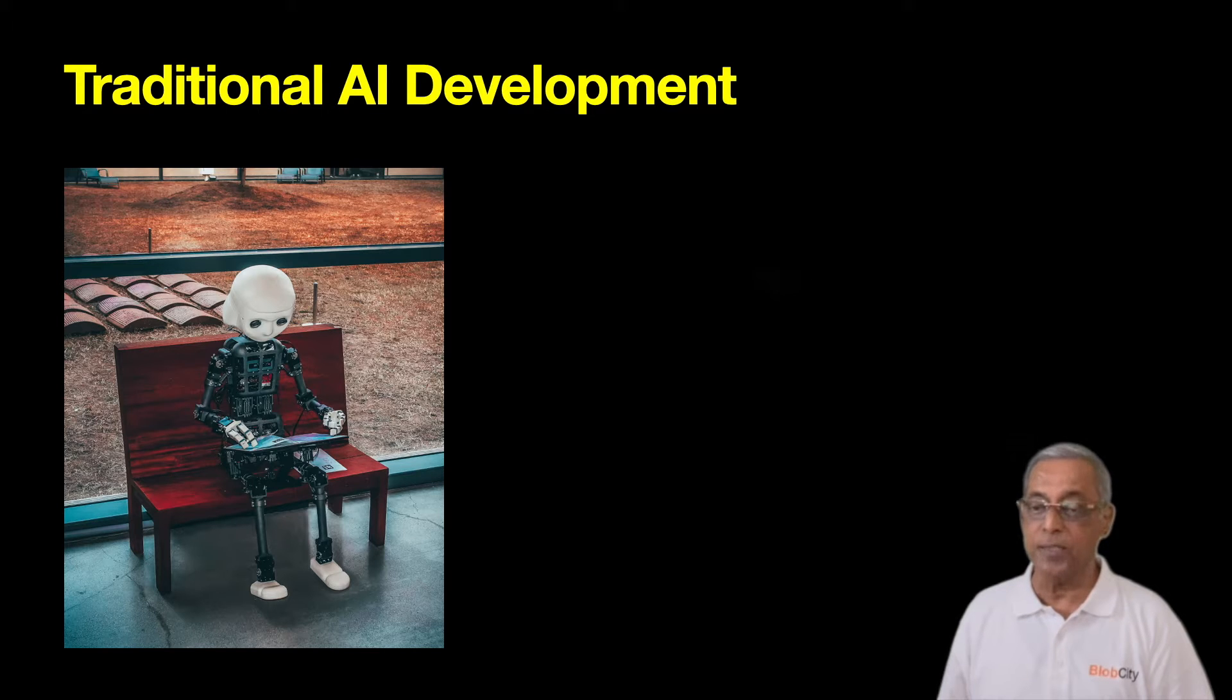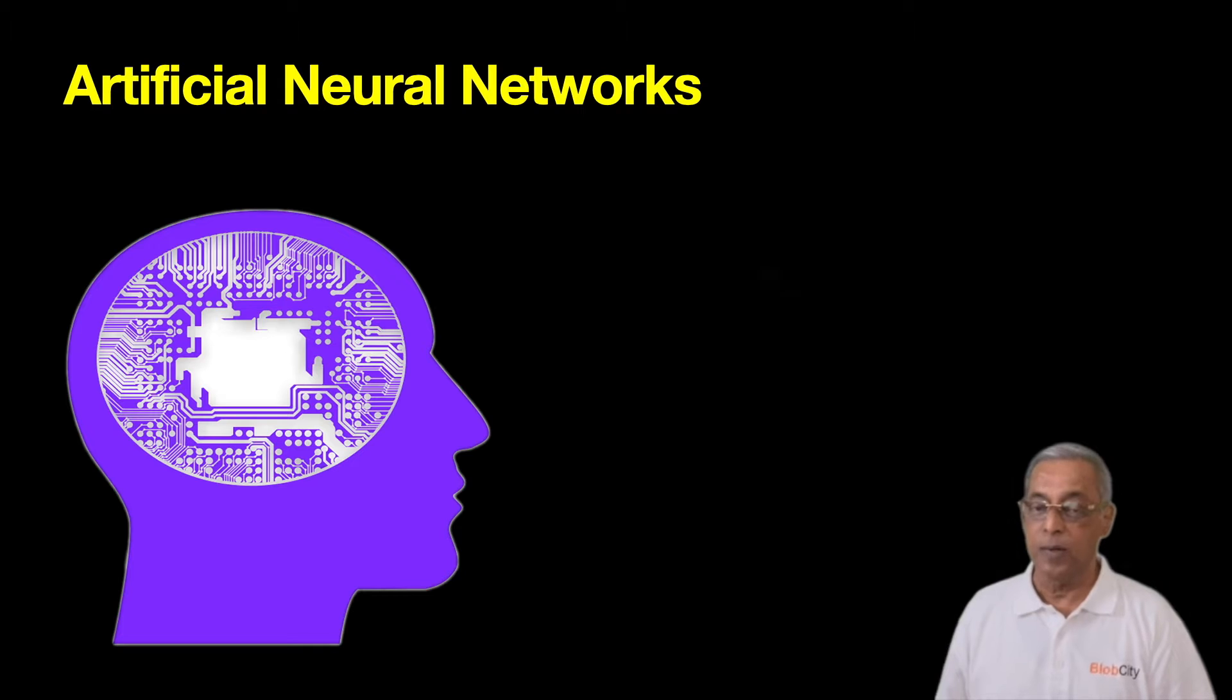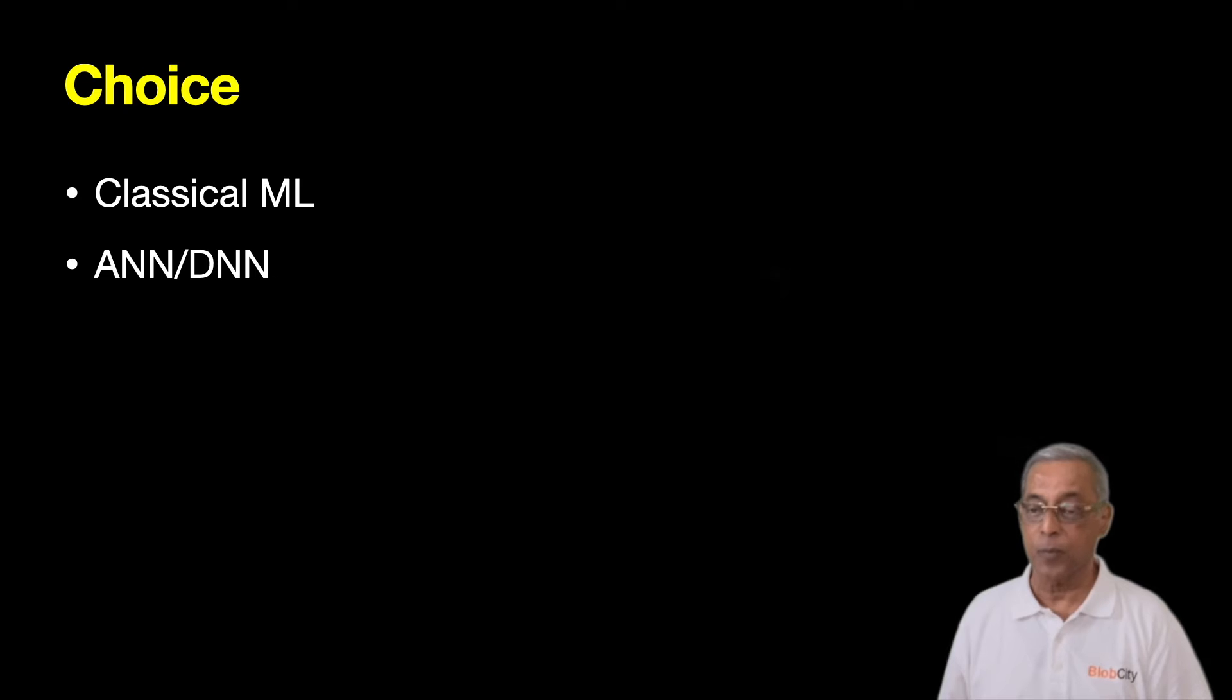We have been using statistical techniques for building machine learning applications for the last several years. The success of ANN-DNN in developing AI applications has now opened up a new way for model development. A data scientist now has a choice between these two approaches.